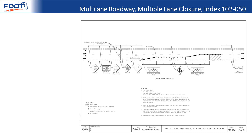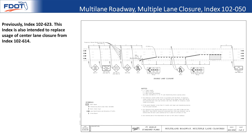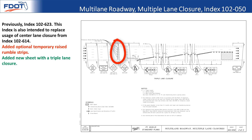Index 102-050, multi-lane roadway multiple lane closure, was previously index 102-623. This index is also meant to be used in place of the center lane closure from index 102-614. There are optional temporary raised rumble strips, and there is also a new sheet with a triple lane closure which was not covered anywhere previously. The device layout has been changed mostly to accommodate the temporary raised rumble strips.